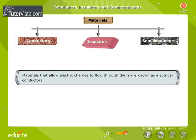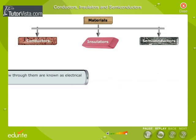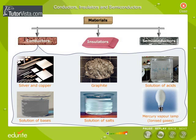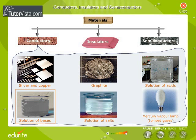Materials that allow electric charges to flow through them are known as Electrical Conductors. Metals like Silver and Copper, Graphite, solutions of acids, bases and salts, ionized gases, etc., which conduct electricity are examples of Conductors.